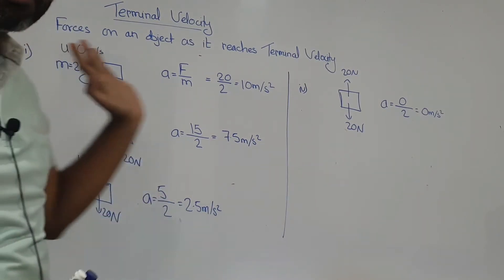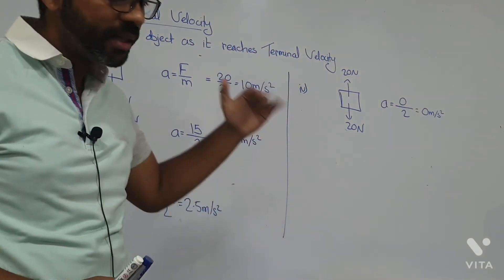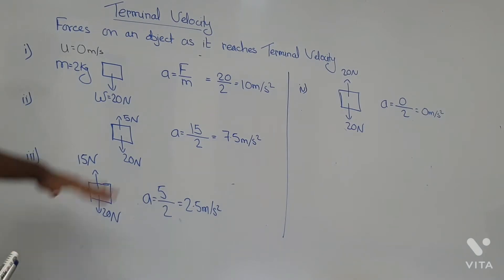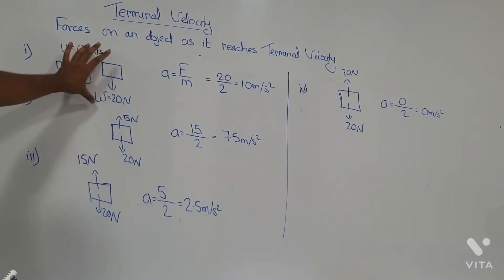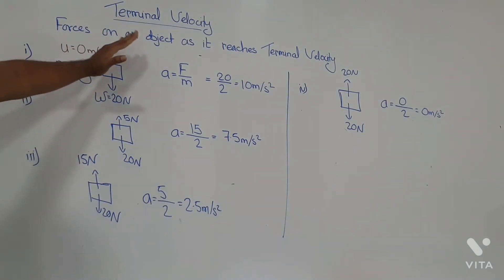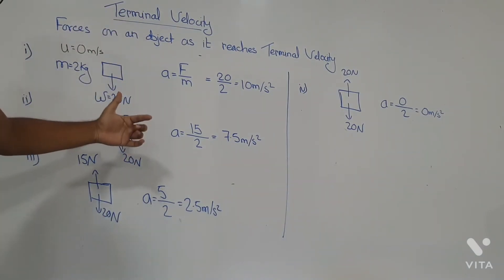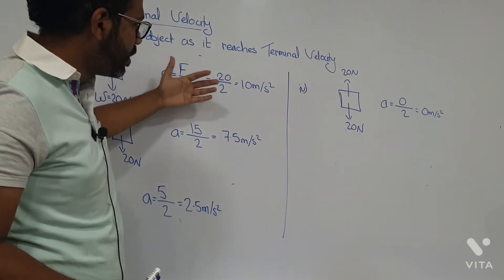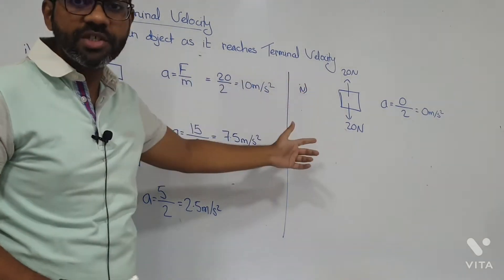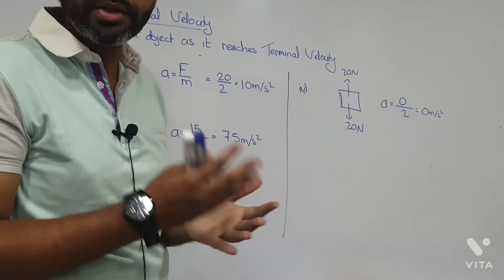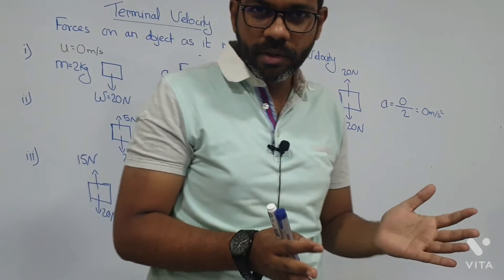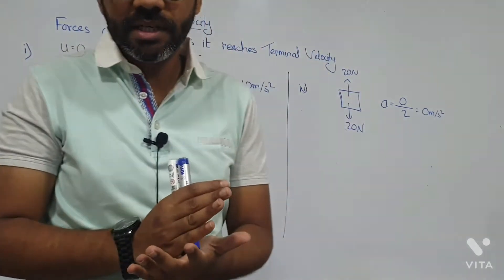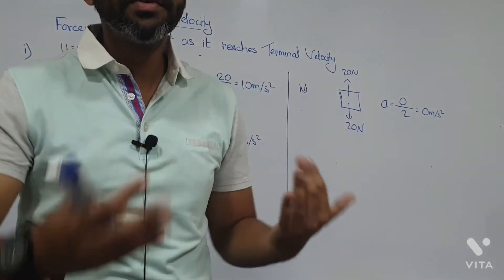So why would it reach a constant level when it's falling down and moving with a resultant force? I am showing an example for an object falling freely through air. Of course there has to be air for the object to reach terminal velocity — if an object is moving through a vacuum it cannot reach terminal velocity because there is nothing opposing it.